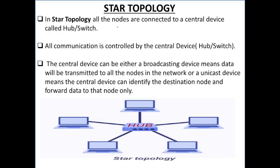First, we have star topology. In star topology, all the nodes are connected to a central device called hub or switch. Star topology mein jitne bhi nodes hote hain, jitne bhi devices hote hain, woh ek central device se connected hote hain — yeh central device aapka hub bhi ho sakta hai, or switch bhi ho sakta hai. All the communication is controlled by the central device — poora ka poora central device control kerta hai.